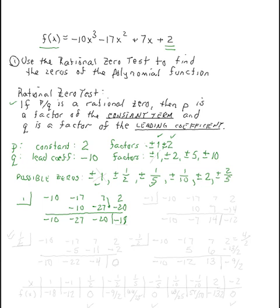Let's try x=negative 1. Lining up our coefficients for synthetic division: bring down negative 10; multiply and add to get negative 7; multiply to get 7, then adding gives 14; multiply again and add to get negative 12. Plugging in negative 1 gives a function value of negative 12 — also not a zero. So both positive 1 and negative 1 have failed.